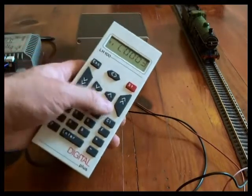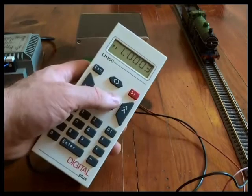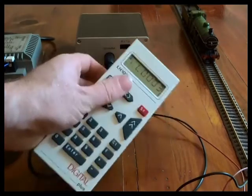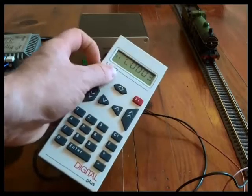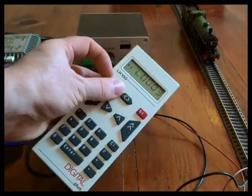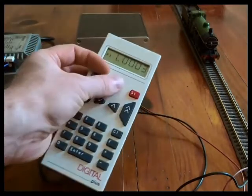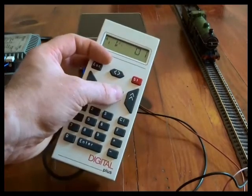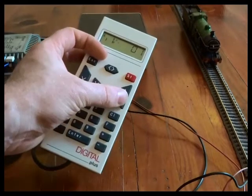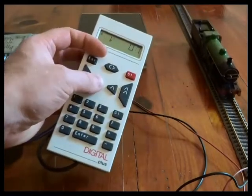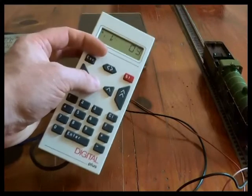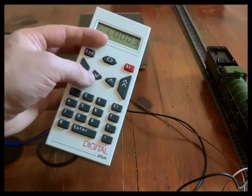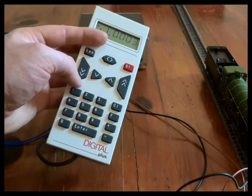So we can look at the controls. You've got direction of travel forwards and backwards, changed with the double arrow button. You can accelerate by small steps using this up arrow or by larger steps using the double arrow, and you can decelerate using the small and double arrow buttons here.